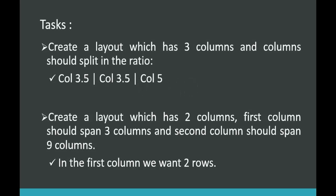The first task is to create a layout which has 3 columns and the columns should split in the ratio 3.5 to 3.5 to 5. Bootstrap grid system provides 12 columns and using those 12 columns we are going to build the layout in that ratio. This can be done with the help of nested rows only.